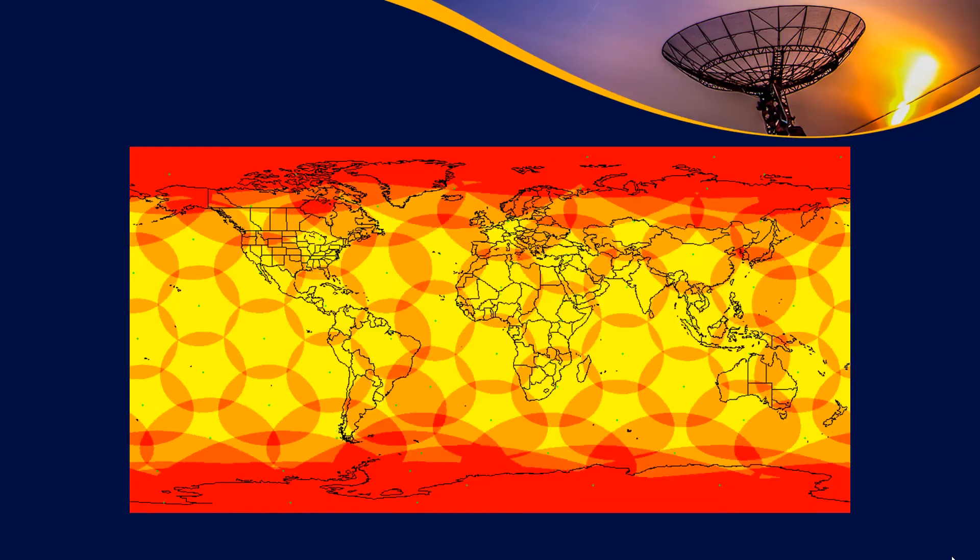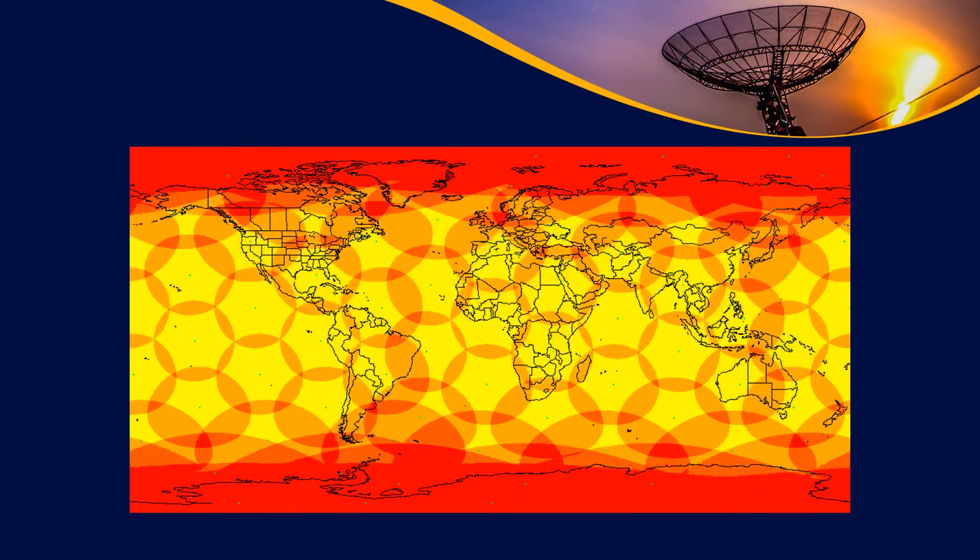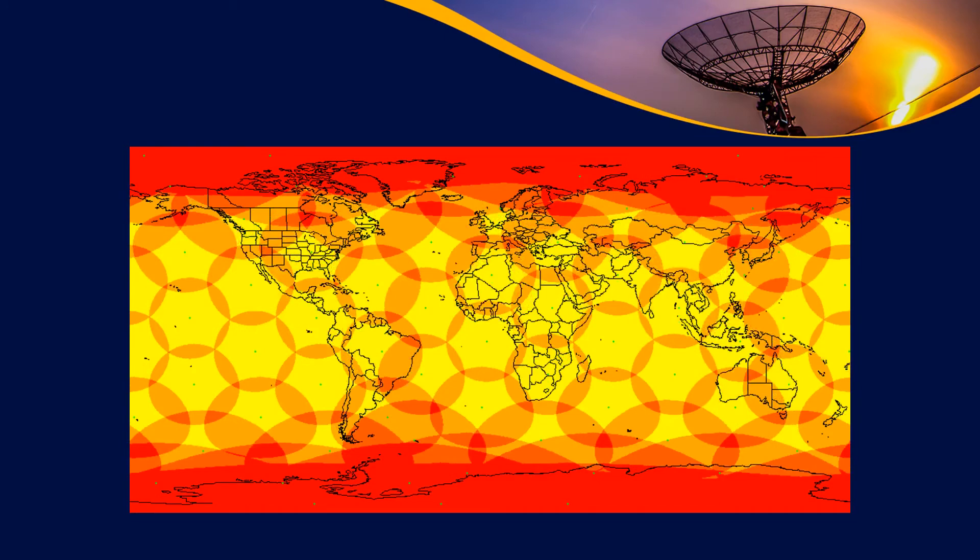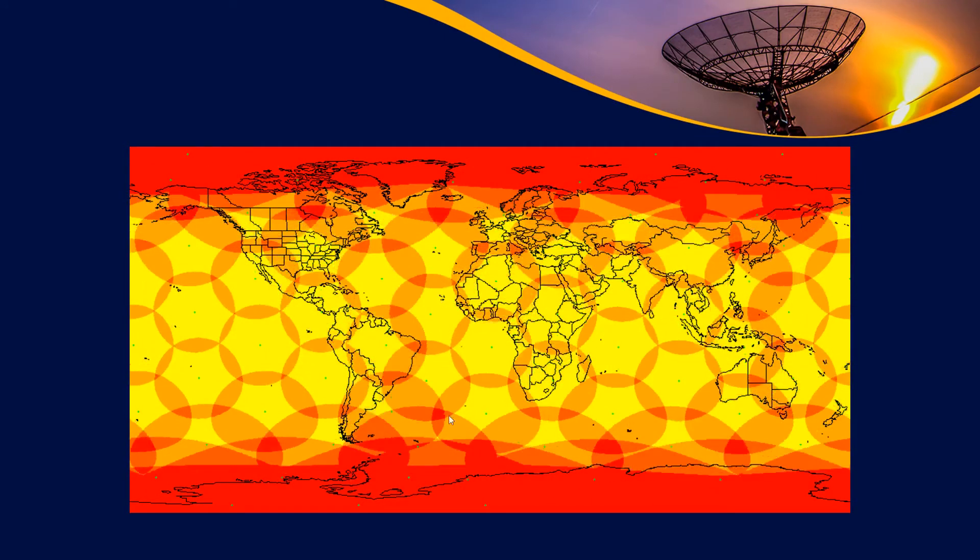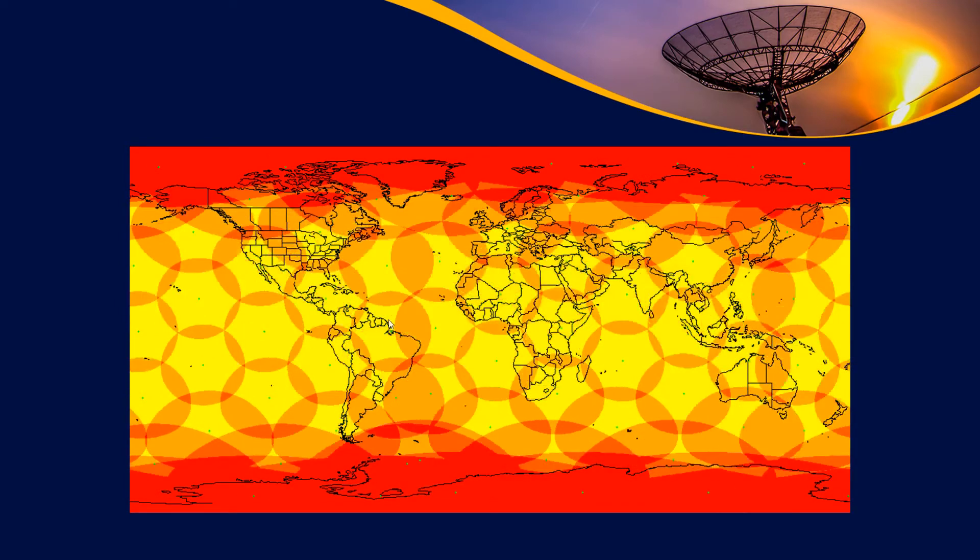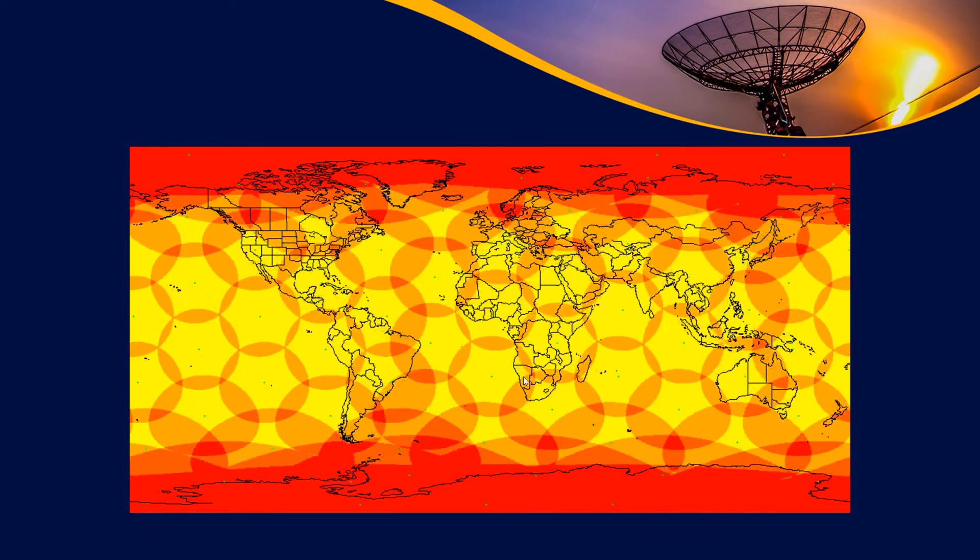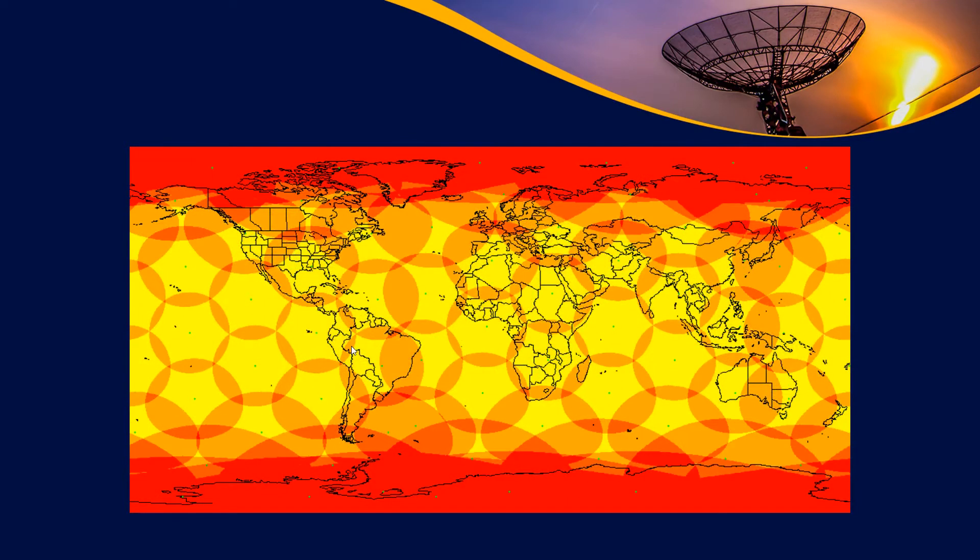So the first thing we're going to talk about is orbital planes. Now this is an example of the Iridium, the original Iridium constellation. You can see satellites are moving in a particular direction, some up, some down, but they're such that they have complete overlap that there's at least a yellow color everywhere all over the globe, although there are some regions where it's more difficult than others.